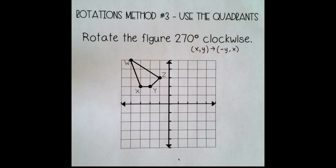The last method is a variation of using the coordinate rules. And we are going to use the quadrants to help us with the rules. So the rules for 90 degrees and 270 degrees, whether you're going clockwise or counterclockwise, are a little tricky to use. So let me show you an example.